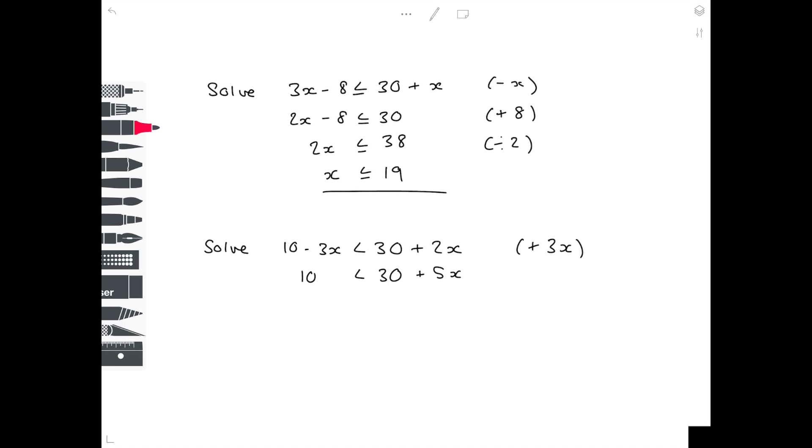We need to get rid of that 30 on the right hand side to leave 5x by itself. So what can we do? We take it away. So minus 20 is less than 5x. Notice that I keep lining up all my inequalities because that's really nice practice. It makes your work very neat. To get x by itself we need to divide by 5, to get minus 4 is less than x. And that is your final answer.